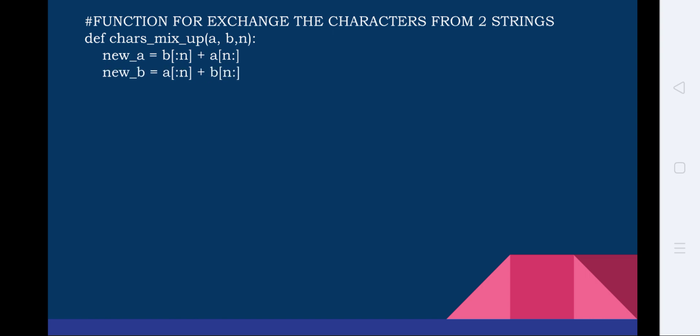Likewise, we create new_b, which equals `a[:n] + b[n:]`. Here `[:n]` means from the start up to n elements, and `[n:]` means from the nth position to the end — this is how elements are split from the string. The function char_mixup creates new strings new_a and new_b from the given strings a and b, and then returns `new_a + new_b`, where the plus again concatenates and joins the two strings.